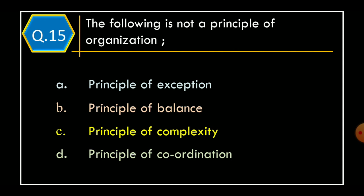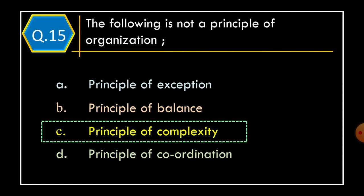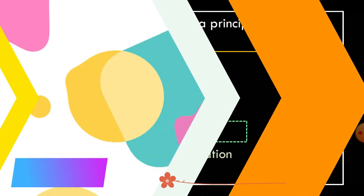Question 15. The following is not a principle of organization: Option A: Principle of exception. Option B: Principle of balance. Option C: Principle of complexity. Option D: Principle of coordination. The correct option is Option C: Principle of complexity. Thanks for watching.